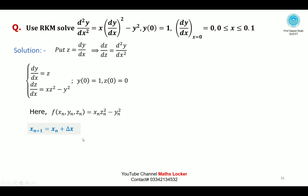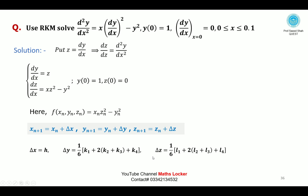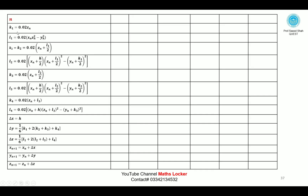The iterative formulas are: xₙ₊₁ = xₙ + Δx, yₙ₊₁ = yₙ + Δy, zₙ₊₁ = zₙ + Δz, with Δx = h, Δy = (1/6)(k₁ + 2k₂ + k₃ + k₄), Δz = (1/6)(l₁ + 2l₂ + l₃ + l₄). Form the table with columns: iteration number, k₁, l₁, k₂, l₂, k₃, l₃, k₄, l₄, Δx, Δy, Δz, xₙ₊₁, yₙ₊₁, zₙ₊₁. For the 0th iteration, the initial conditions give the starting point (x₀, y₀, z₀) = (0, 1, 0).